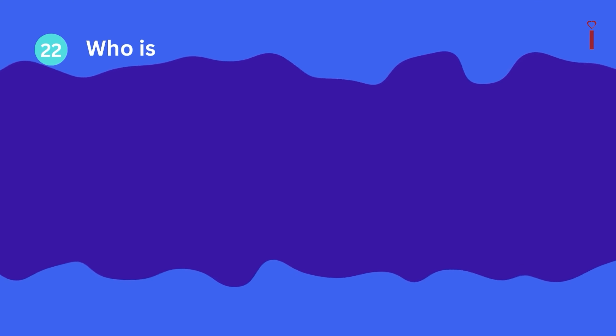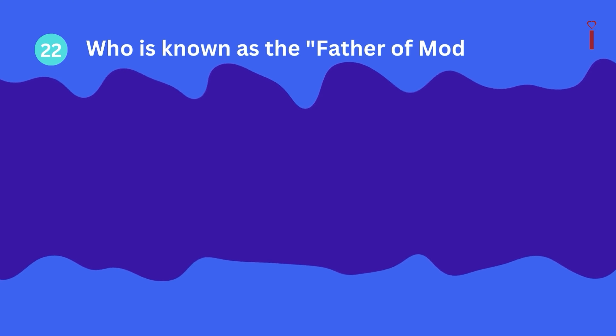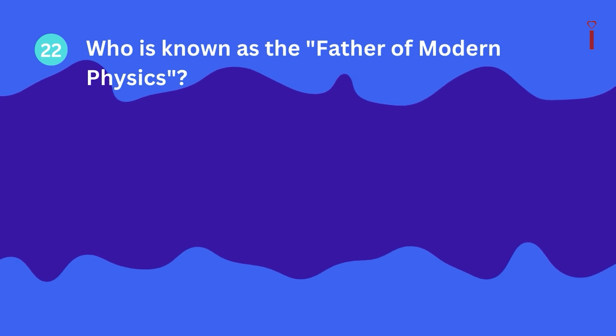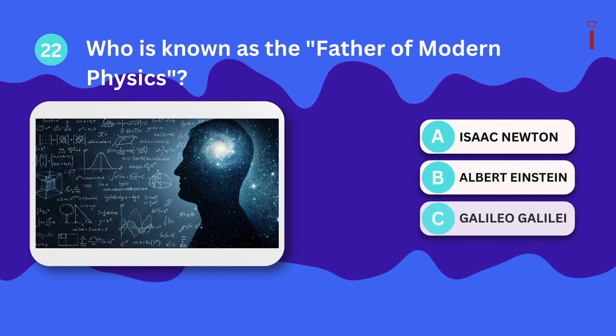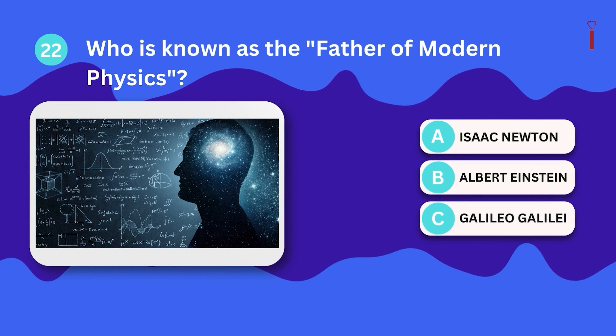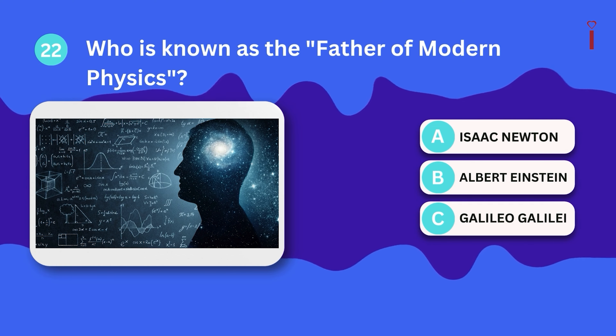Question 22: Who is known as the father of modern physics? A. Isaac Newton, B. Albert Einstein, C. Galileo Galilei.